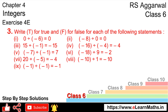Let's do question number three of Exercise 4E — the integer question. Question three says: write T for true and F for false for each of the following statements. The first statement: if we divide zero by any number, our answer is zero. As we know from the introductory part, zero divided by any number will be zero. This is TRUE.